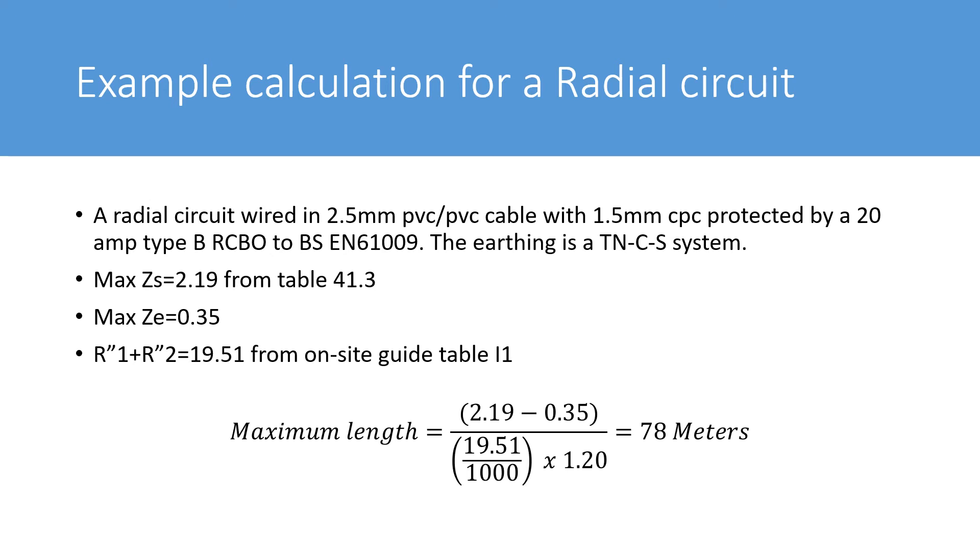So here we have the equation at the bottom. The maximum length is equal to, in brackets, 2.19 minus 0.35. And that's divided by 19.51 divided by 1000, and then multiplied by the correction factor of 1.2. And that gives us the answer of 78 meters.